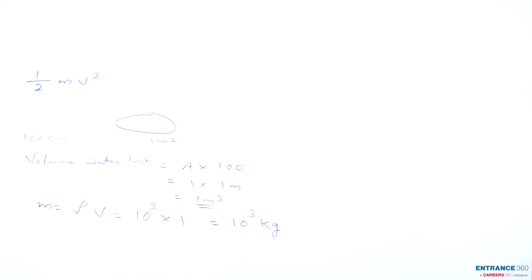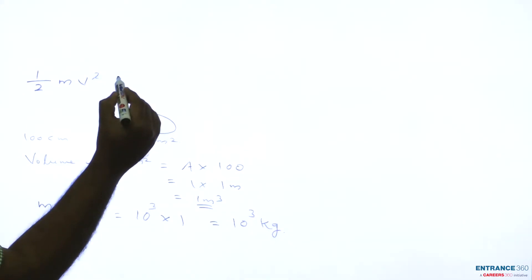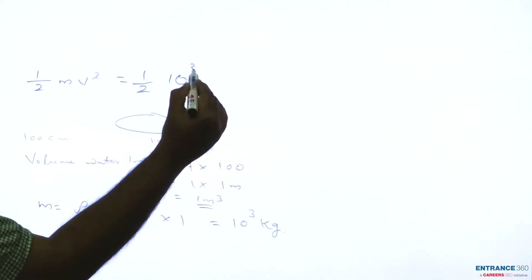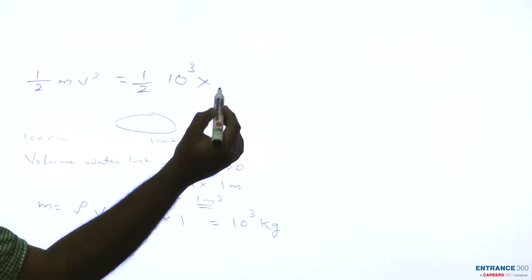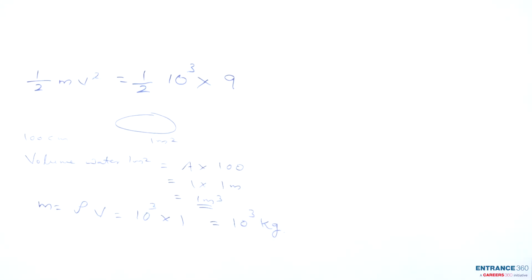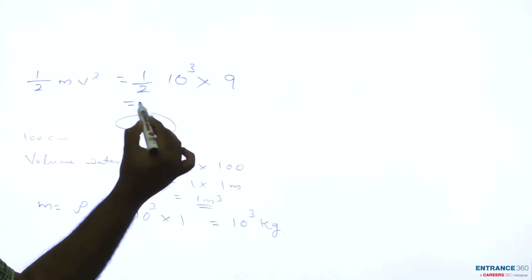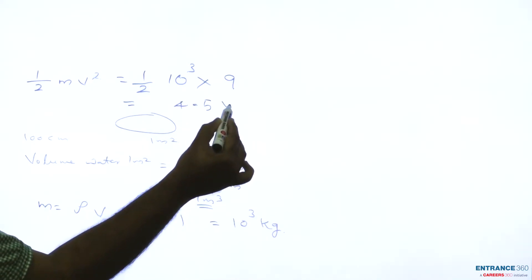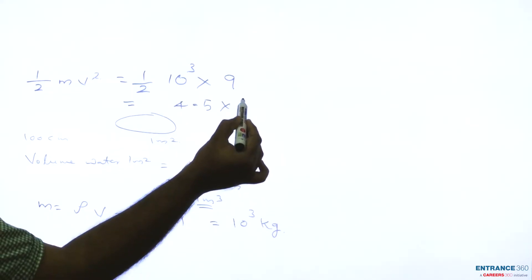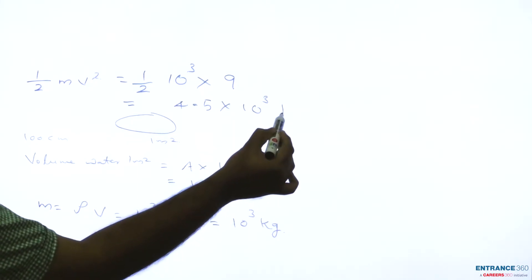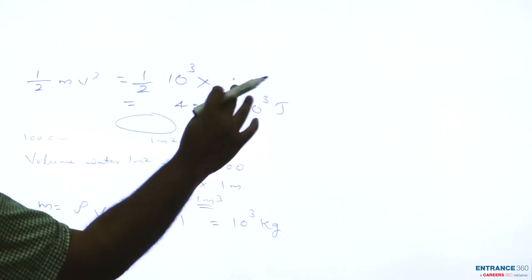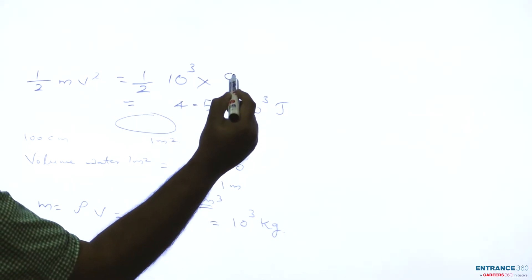Kinetic energy will be half times 10³, which is the mass, and velocity is given as 9. It will be 4.5 × 10³ joules. This is 9 squared in the formula half mv².